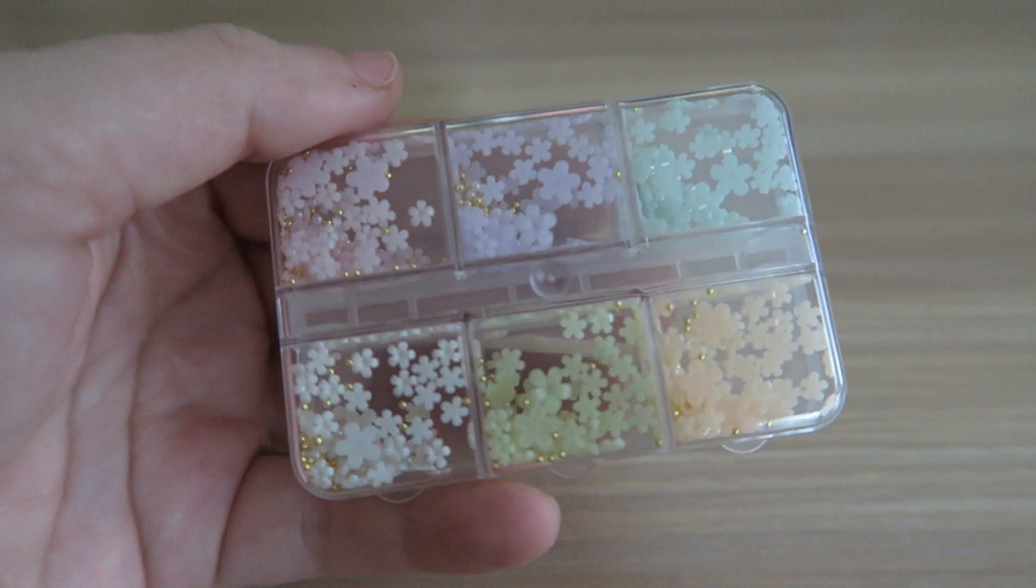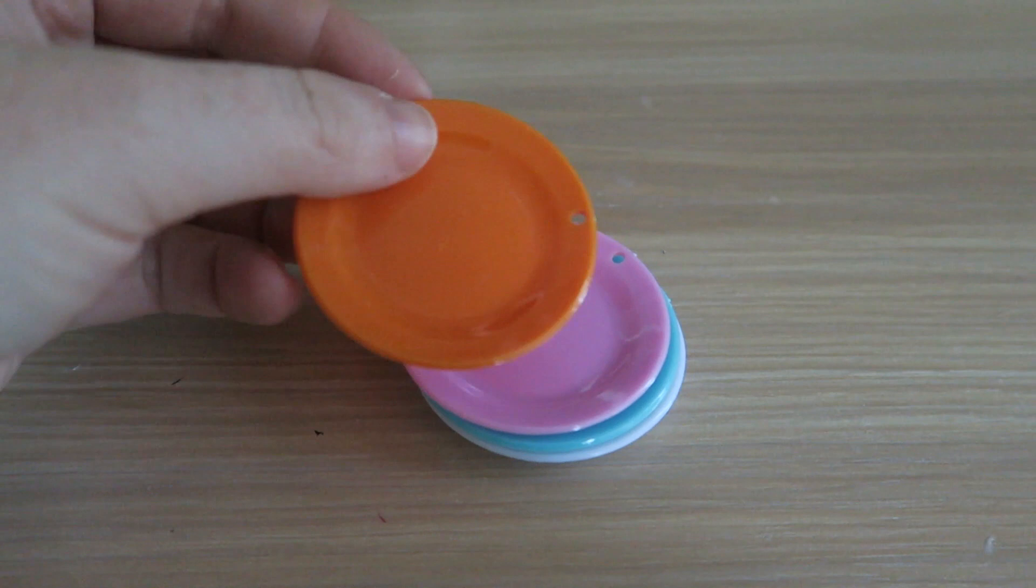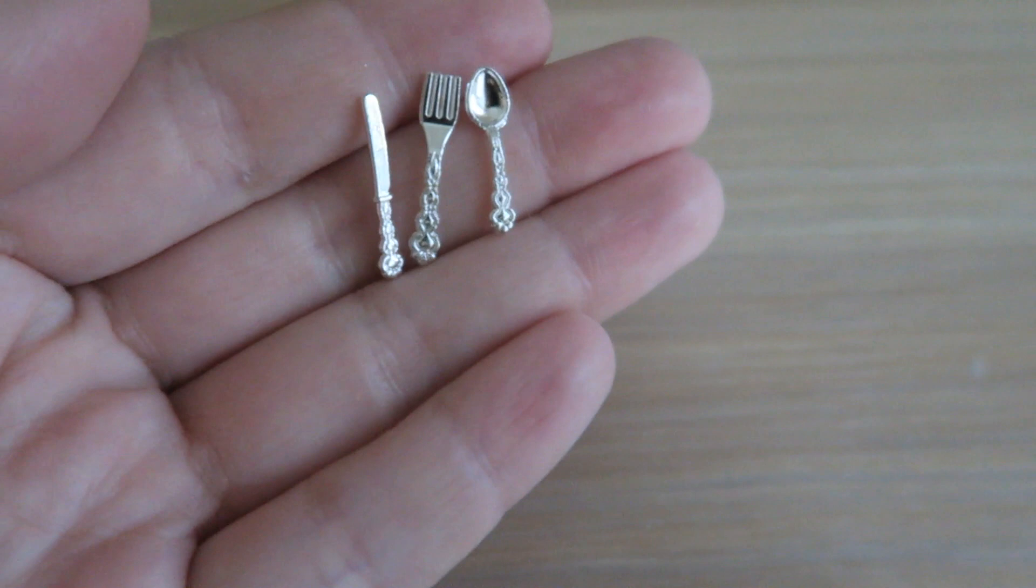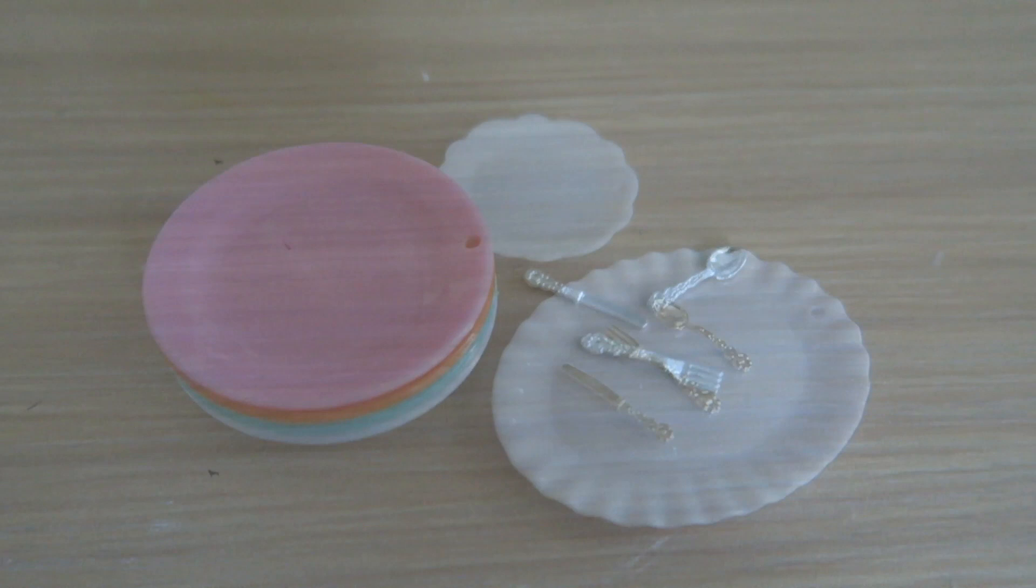Next we have some miniature items. So this is a set of 4 plates and then we have this slightly larger oval plate with ridges and then a slightly smaller plate as well. And then finally we have this set of utensils. So a silver set of a spoon, a fork, and a knife. And all the plates have holes so you can make them into keychains or jewelry.